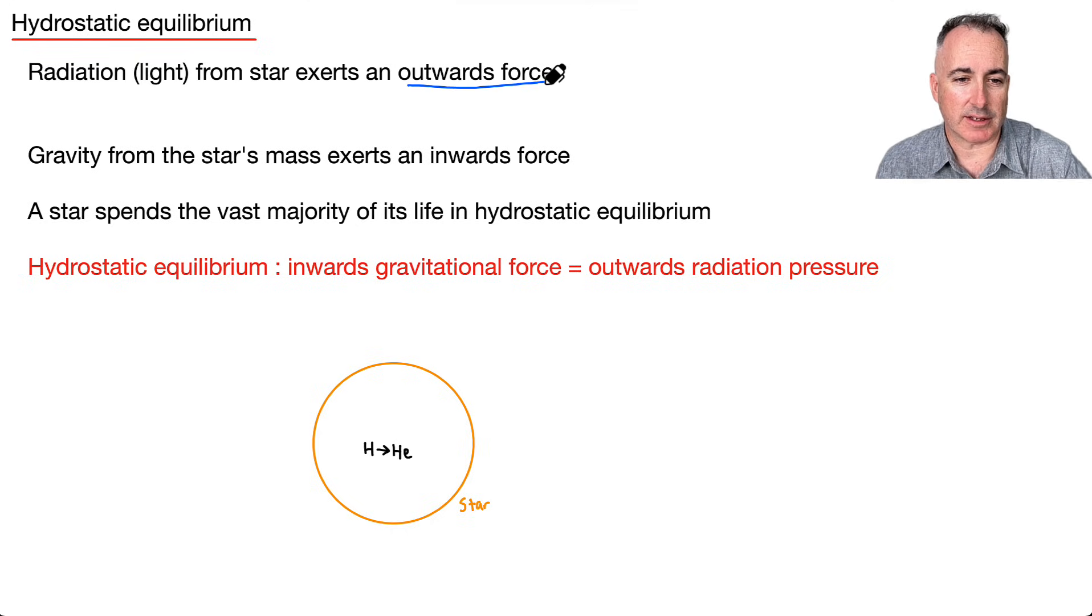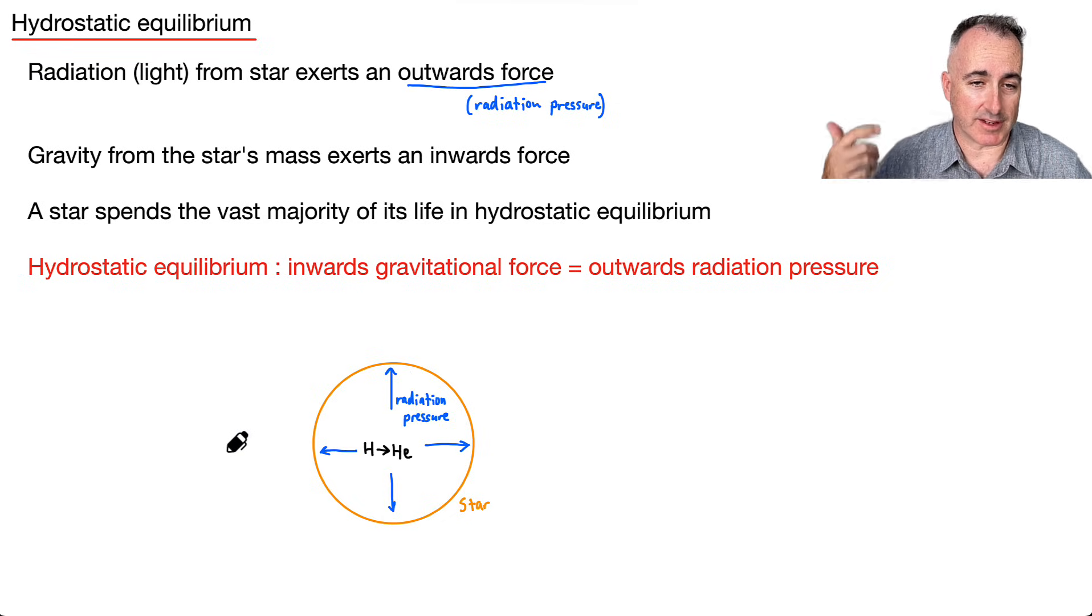So that means, for example, in here, remember we got energy out of this, that means we're going to have some outwards force right here. So this is going to be going outwards this way, and this way, and this way, and this way. Now, we call this a radiation pressure, because it turns out light can actually push stuff. So there's this outwards radiation pressure. Now, this is actually in all directions. I've just drawn four of them, but this is in all directions.